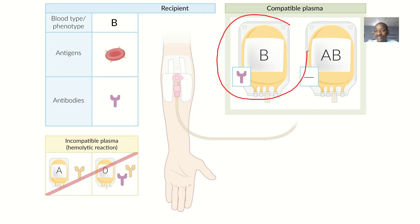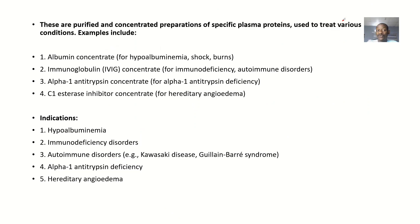You can see plasma — plasma is not red like blood. It's kind of brownish, light brownish or yellowish.